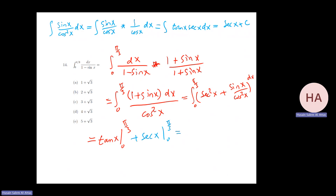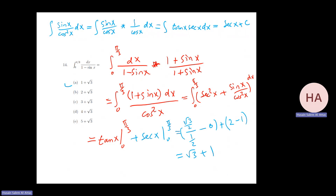Evaluating from zero to π/3: tan(π/3) is tan 60, which is sin 60 over cos 60 — that is (√3/2) over (1/2), giving √3. Plus secant(π/3): cosine(π/3) is one half, so secant is 2. Minus tan(0) which is zero, minus secant(0) which is 1. So the answer is √3 plus 2 minus 1, which is √3 plus 1.